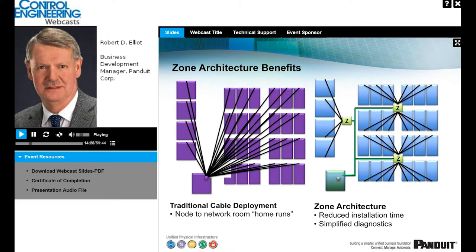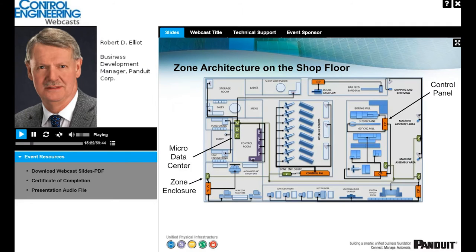Zone architecture also makes it easier to future-proof the design. Future-proofing means you don't design your cabling and physical layer only for today's network needs — you look toward tomorrow's needs. Copper cabling and fiber can be expected to last 10, 15, or 20 years, and the data rates run in future years could exceed the current performance requirements of that cable. For example, installing high-performance fiber between the network room and the zone enclosure, with copper cabling that can be upgraded later.